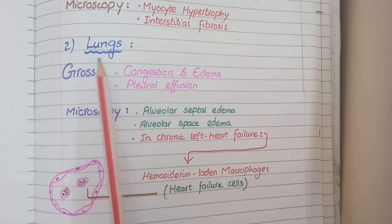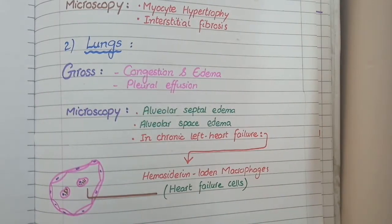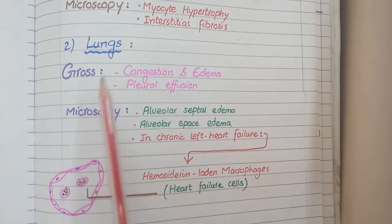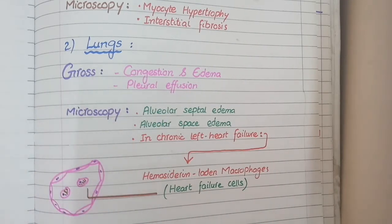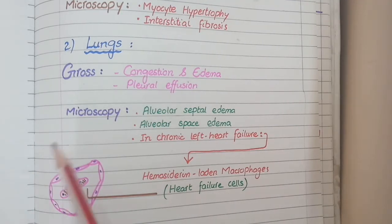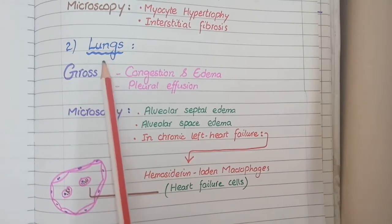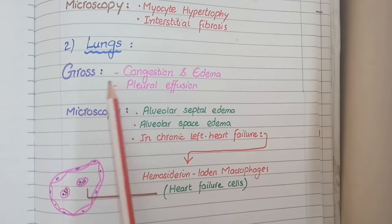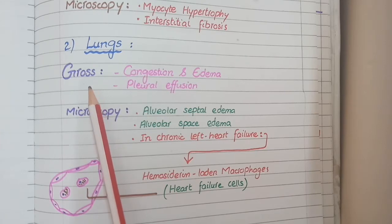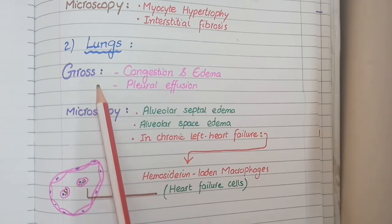We will now see the morphological features of left-sided heart failure at the level of the lungs. The left ventricle and left atrium receive blood from the lungs through pulmonary veins, so failure of the left ventricle results in congestion of blood in the pulmonary circulation.